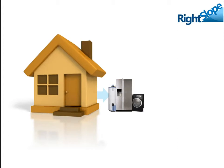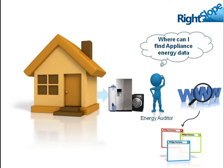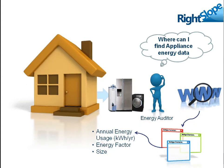A key challenge faced by energy auditors is how to determine the energy usage of the existing appliances within the home, such as hot water heaters, refrigerators, and clothes washers — with the general question of where can I find the appliance energy data. The usual steps are to go out to the Internet, visit various websites, and look up the appropriate information by appliance on annual energy usage, energy factor, and size. This is a very time-consuming process and difficult to complete on-site at the audit.